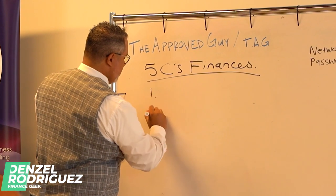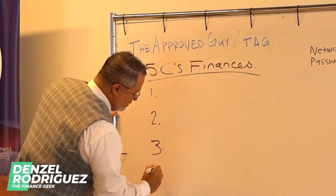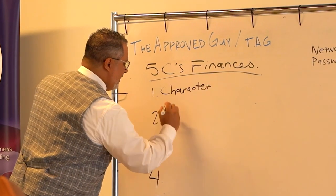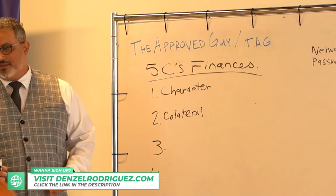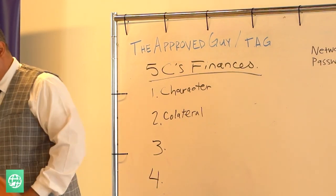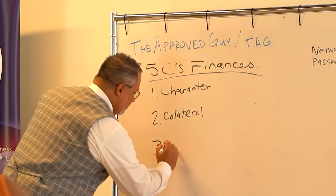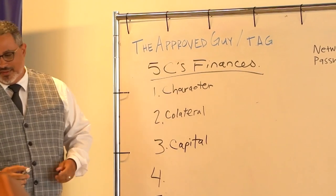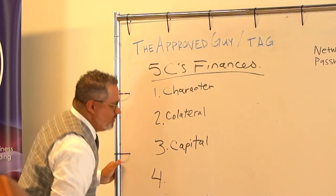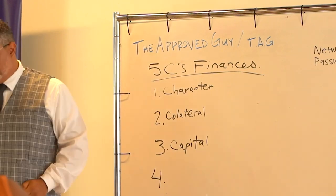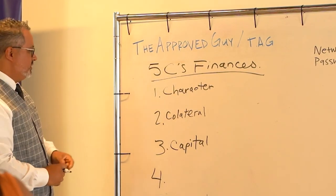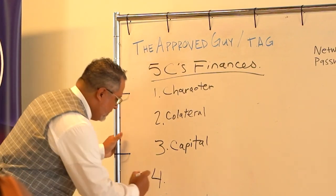Can anybody tell me what the 5 C's are? That's character, correct. And then somebody said collateral. The full list is: character, capital, capacity, collateral, and conditions.